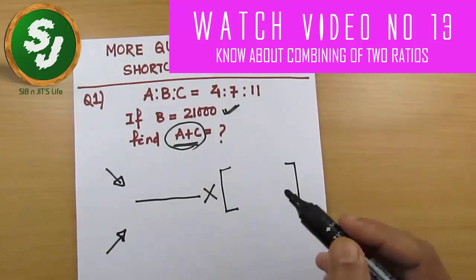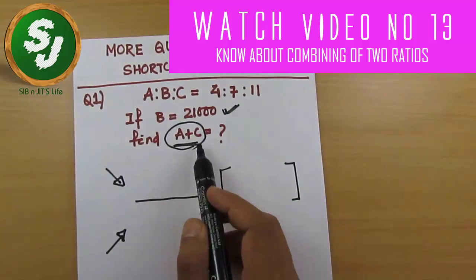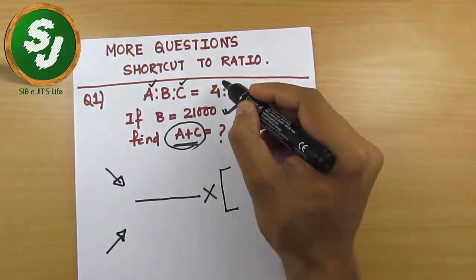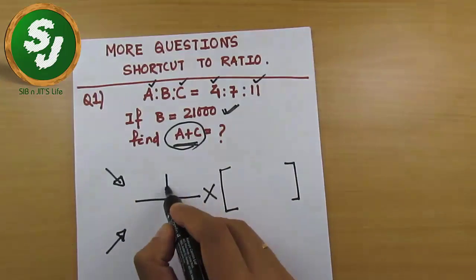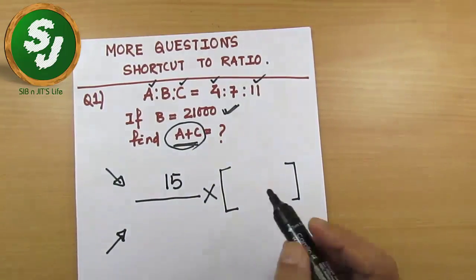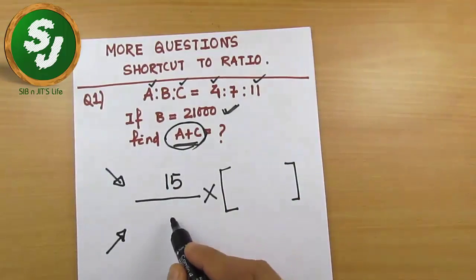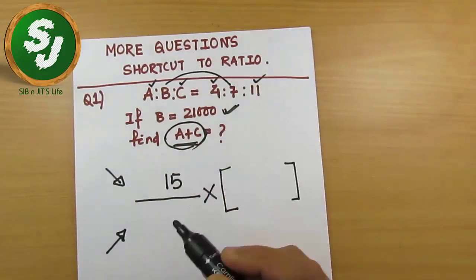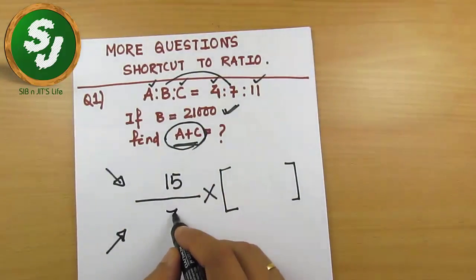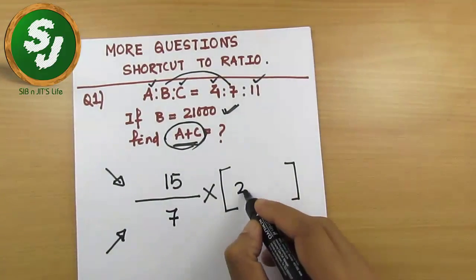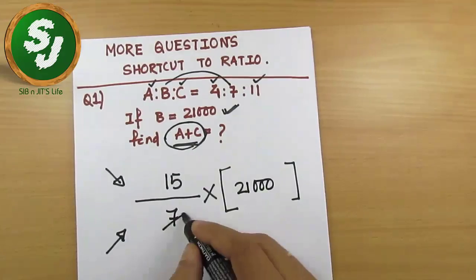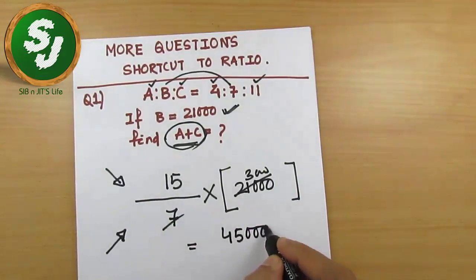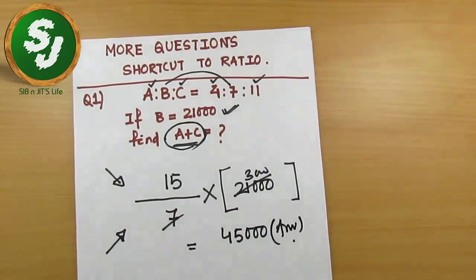In this case b equals 21,000. Find a plus c — this is the question, so the question goes on top. A plus c means you write a and c from the ratio part: a plus c is 4 plus 11, which is 15. On the denominator, b is given, so the ratio value of b is 7, and the number given is 21,000. So the answer is 15 over 7 into 21,000, which equals 45,000.